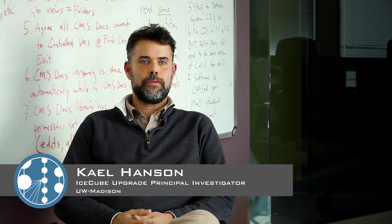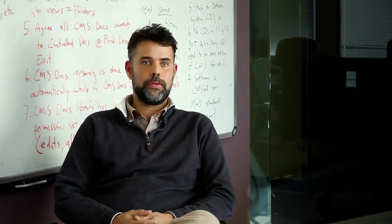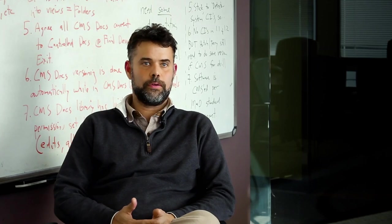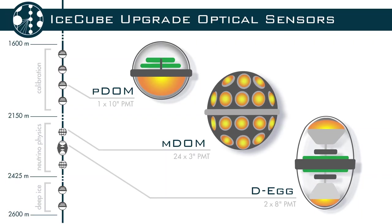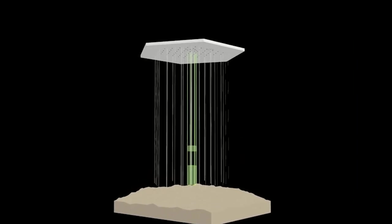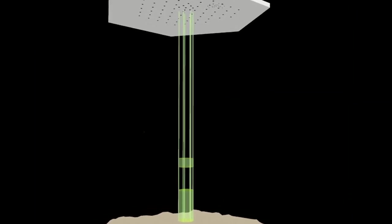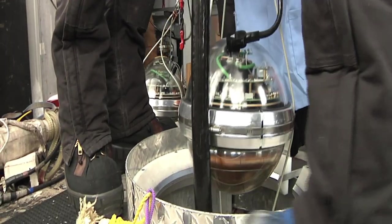The IceCube upgrade is an extension of additional optical sensors to the current operating IceCube Neutrino Observatory. It will be on the order of 800 new advanced photo detectors deployed deep within the existing IceCube detector and connected in the same way using cables and integrated into the IceCube data acquisition system.